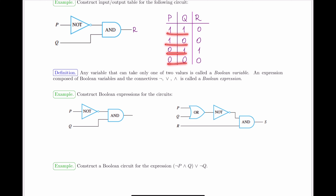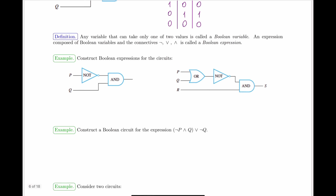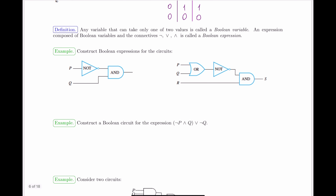It feels like we should be able to leverage what we already know of logic operations to make the job easier — and that's exactly what we're going to do. We introduce the notion of a Boolean variable: a variable that can take on only one of two values, in our case one and zero. An expression composed of Boolean variables using the connectives we've seen as gates — NOT, OR, AND — is called a Boolean expression.